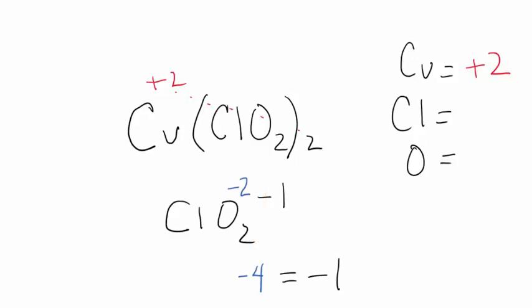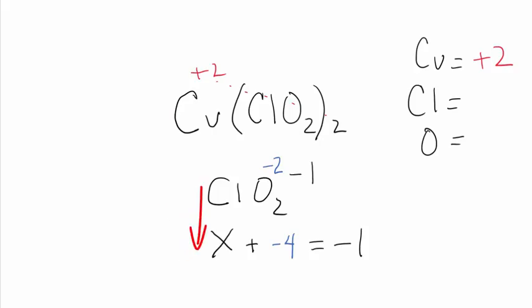Now you think about it like a simple algebra equation. We want to get the oxidation number for this chlorine, so we're going to call that x. If you solve this for x, x plus minus 4 gives minus 1, then your x is going to equal positive 3.